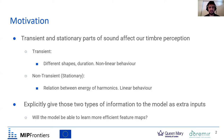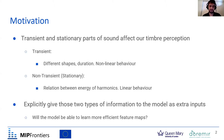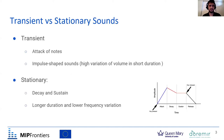We decided to do a separation into transient and stationary to see that by explicitly giving those two types of information to the model, it would be able to learn more efficient feature maps. That's our main motivation.